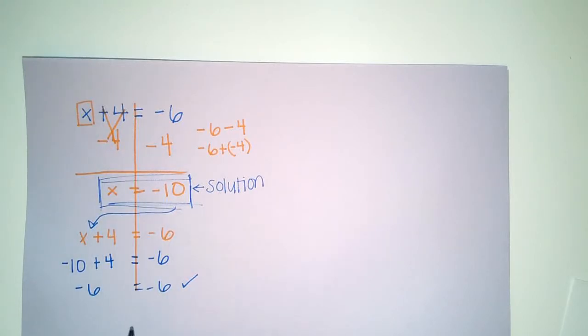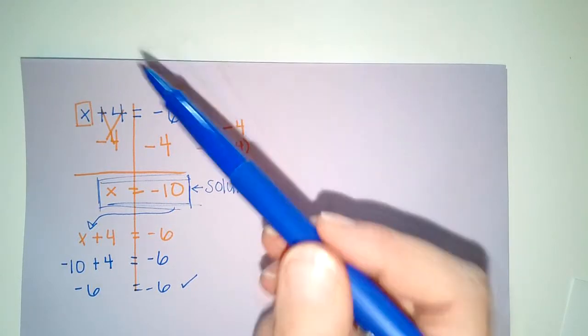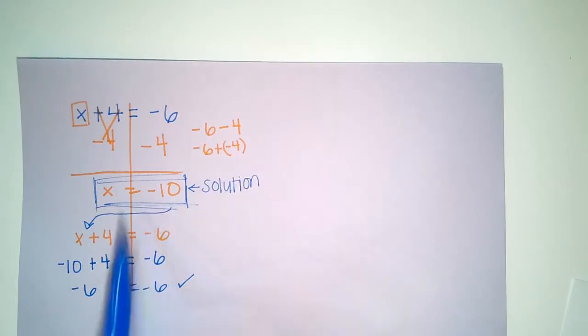Now, if we were to get something different here, let's say we accidentally got a different number, -8 or something like that, that would mean we need to go back through and check our work again. Try again.